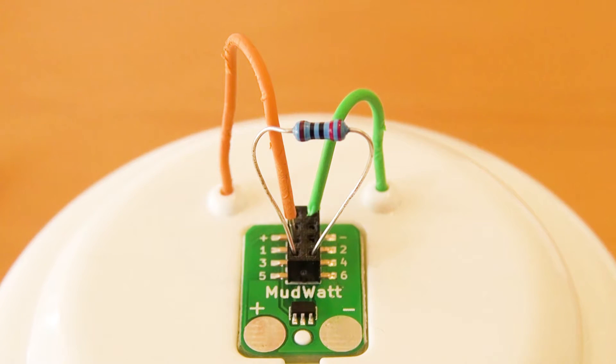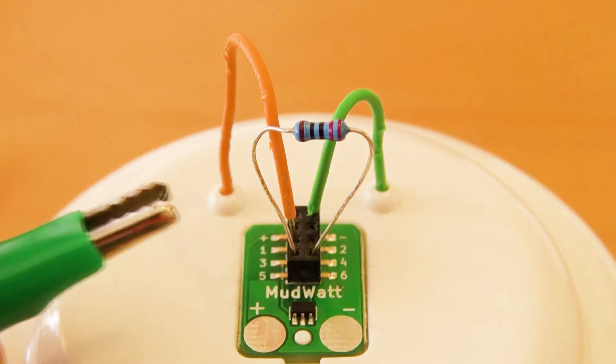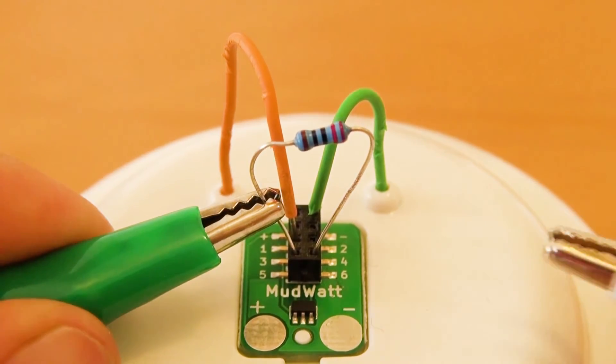Now, take both alligator clip cables that are connected to the multimeter and attach each of them to one side of the resistor.